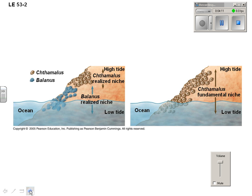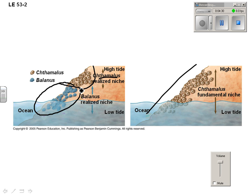Here's an example with two kinds of barnacles. When they are together, the Chthamalus barnacles' fundamental niche goes all the way up as high as the tide is. But when they're living in the same place as Balanus, they only live up here, and the Balanus live down below — that's their realized niche.